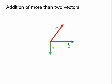Now let's look at how we can add more than two vectors together. Here we have three vectors A, B and C.